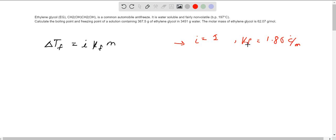Here m is molality. To find molality, the formula is number of moles of ethylene glycol divided by mass of solvent in kg. The moles are equal to the given mass, which is 367.5, divided by molar mass of ethylene glycol, which is 62.07.